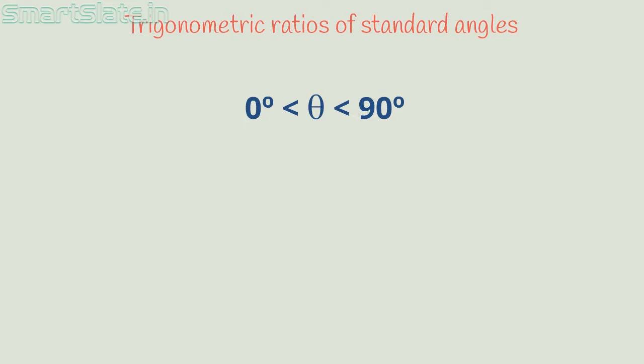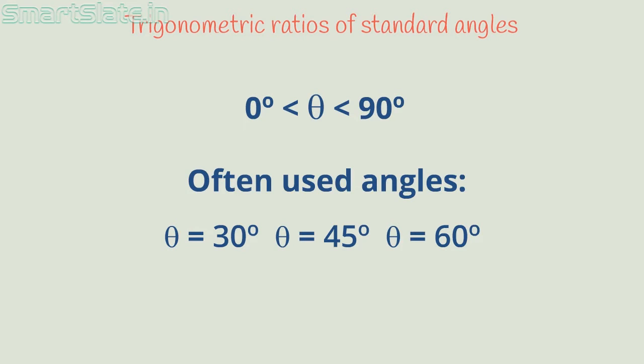When we construct right angled triangles we often use 30 degrees, 45 degrees, or 60 degrees for acute angles in the triangle. In this video we will find value of trigonometric ratios when angle theta is 30 degrees, 45 degrees, or 60 degrees. We will also find value of trigonometric ratios if theta is 0 degrees or 90 degrees.